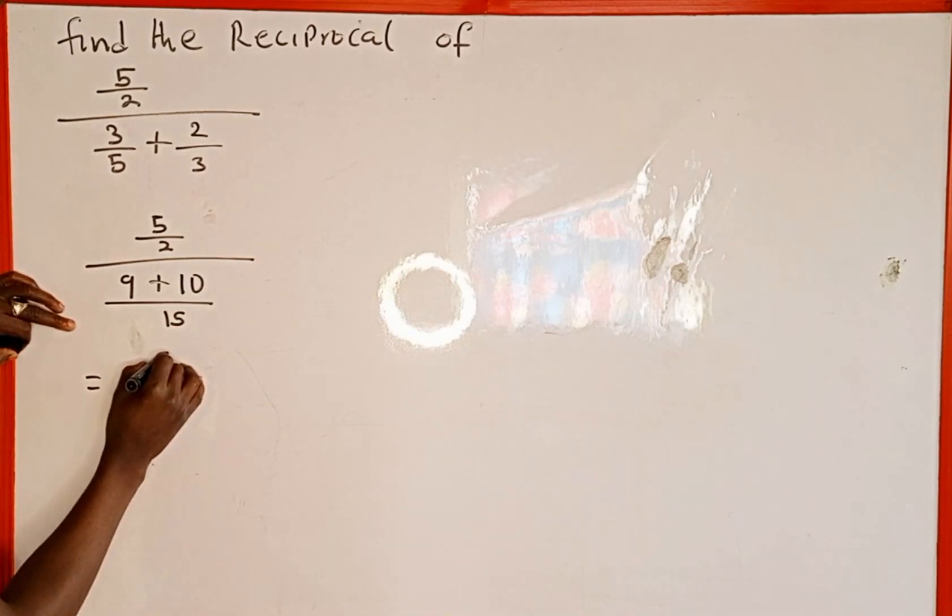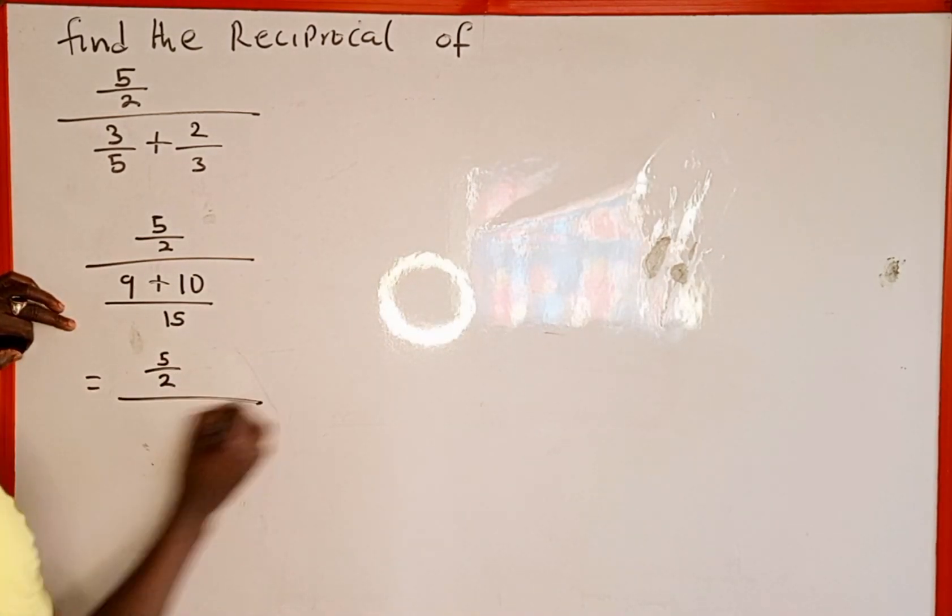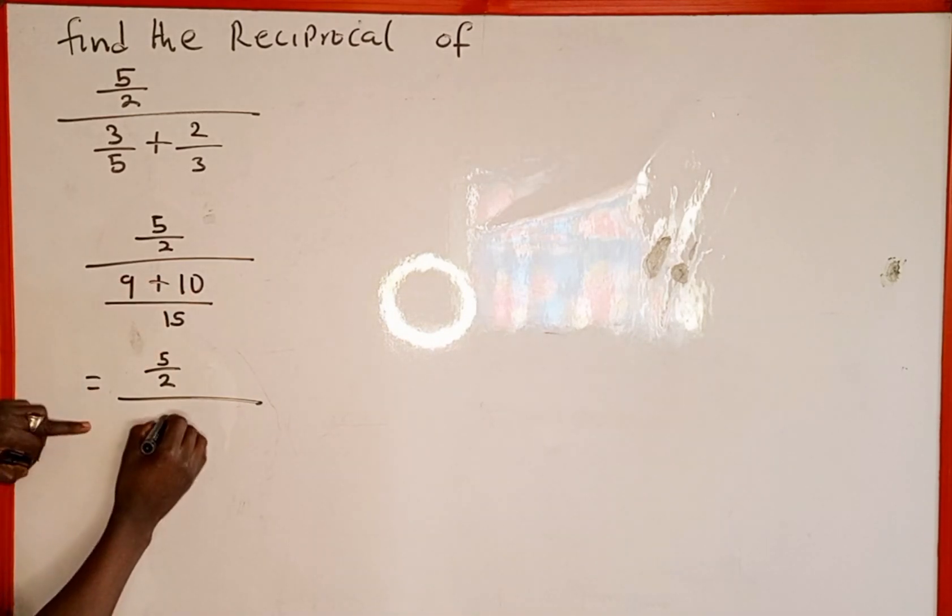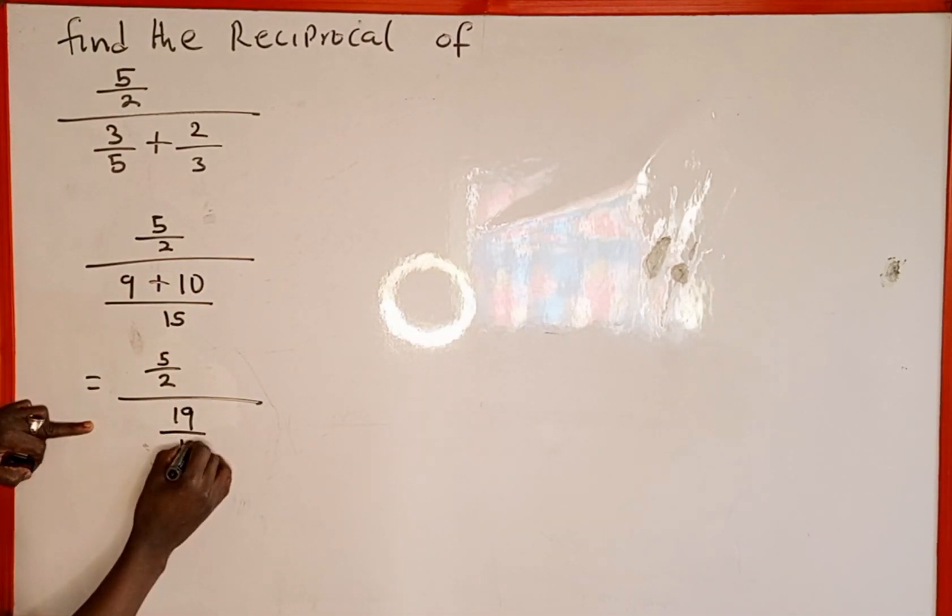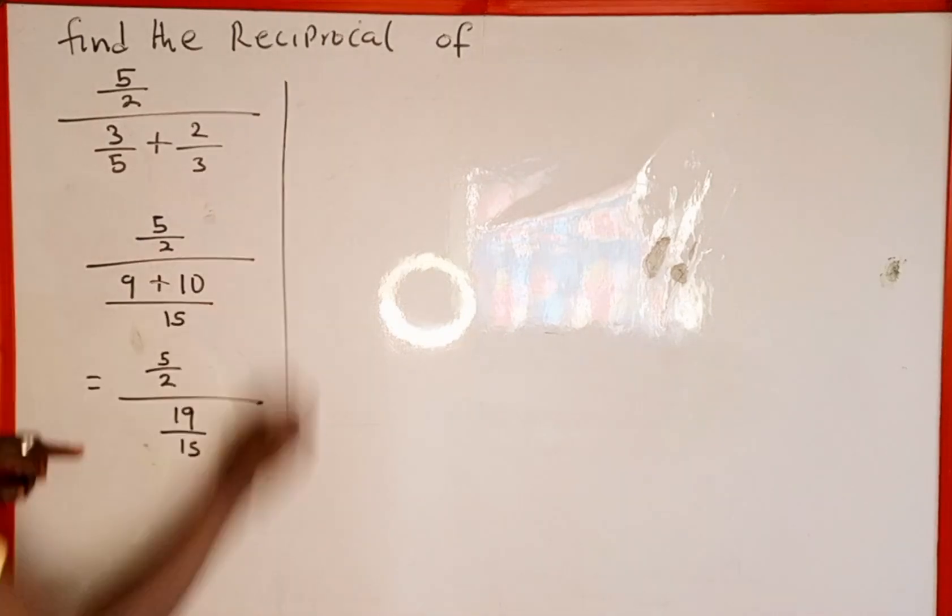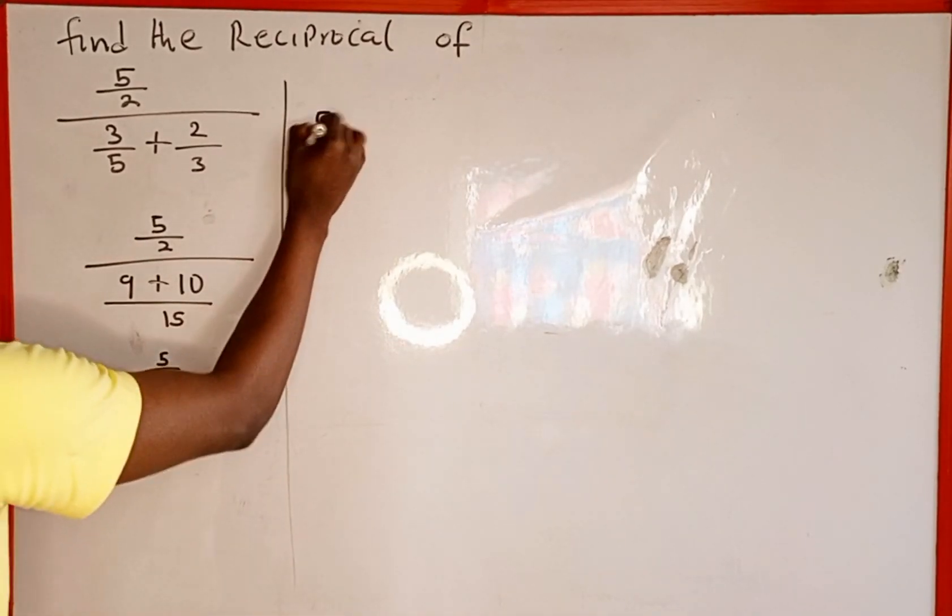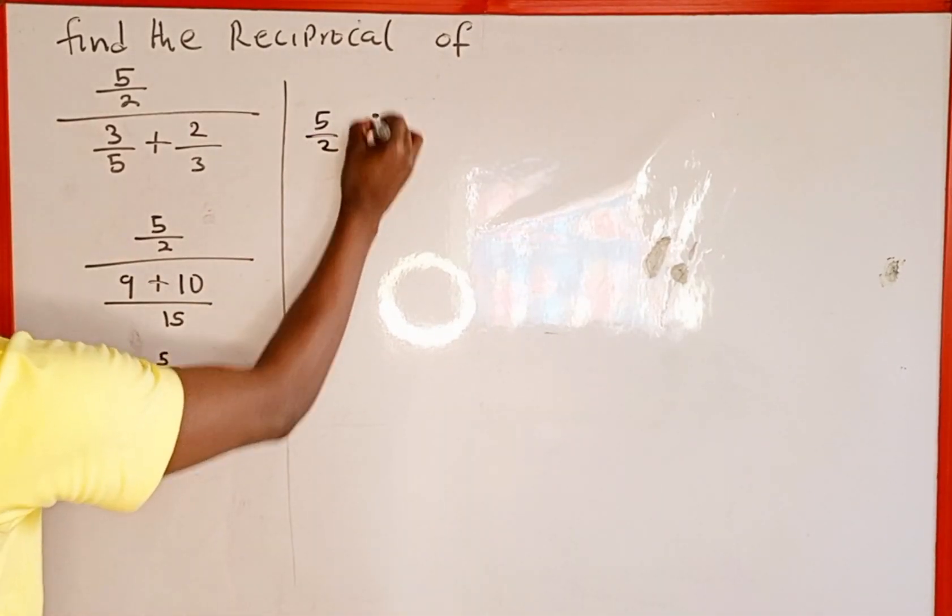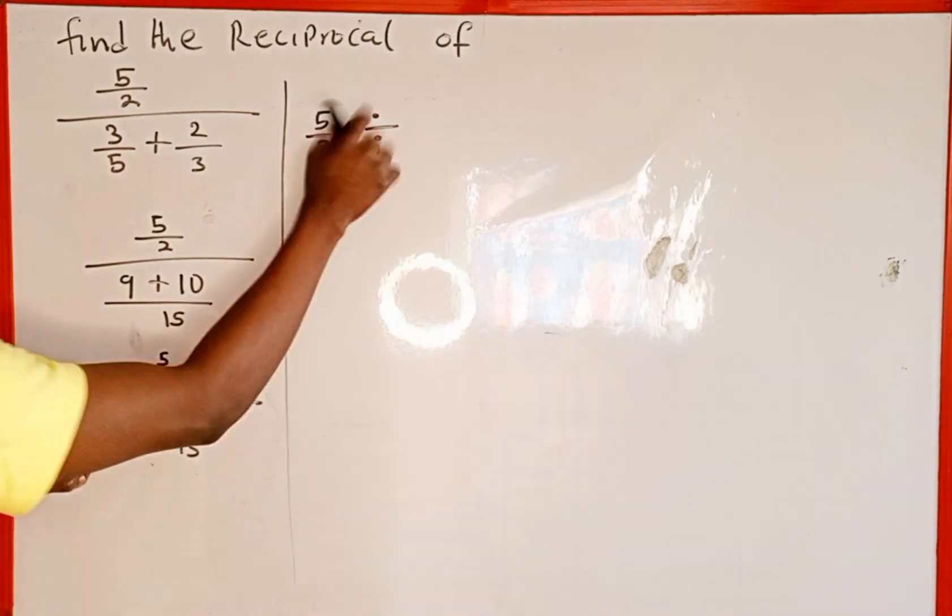Now this is the same as 5 over 2 divided by, 9 plus 10 is going to give us 19, then over 15. And this is the same as 5 over 2 divided by 19 over 15.